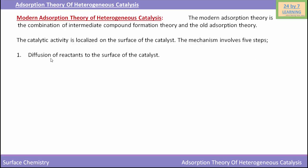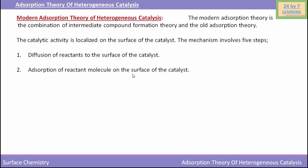Number one is diffusion of reactants to the surface of the catalyst. The second step is the adsorption of reactant molecules on the surface of the catalyst. Due to adsorption, the concentration of the reactant on the surface of the catalyst increases, and due to the increased concentration of reactants, the reactions proceed rapidly.